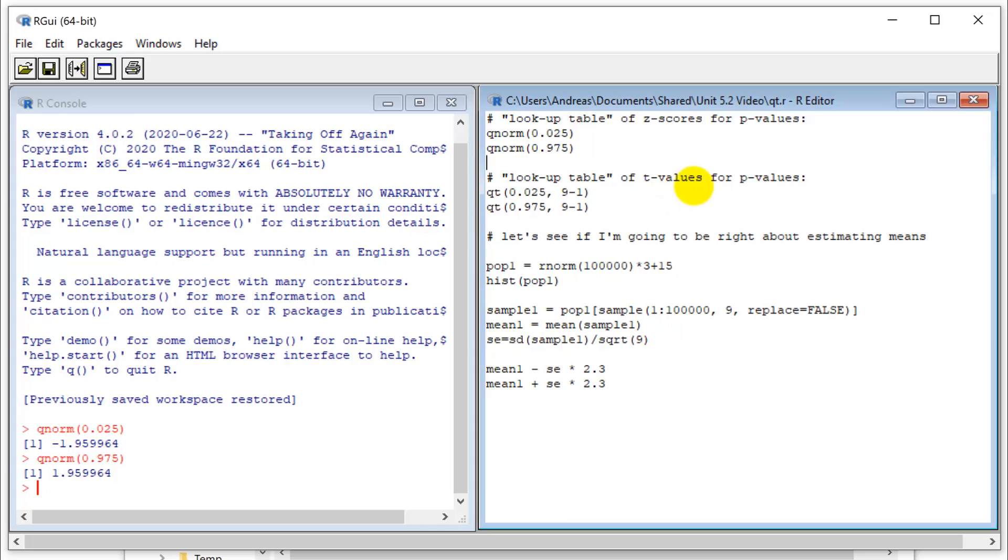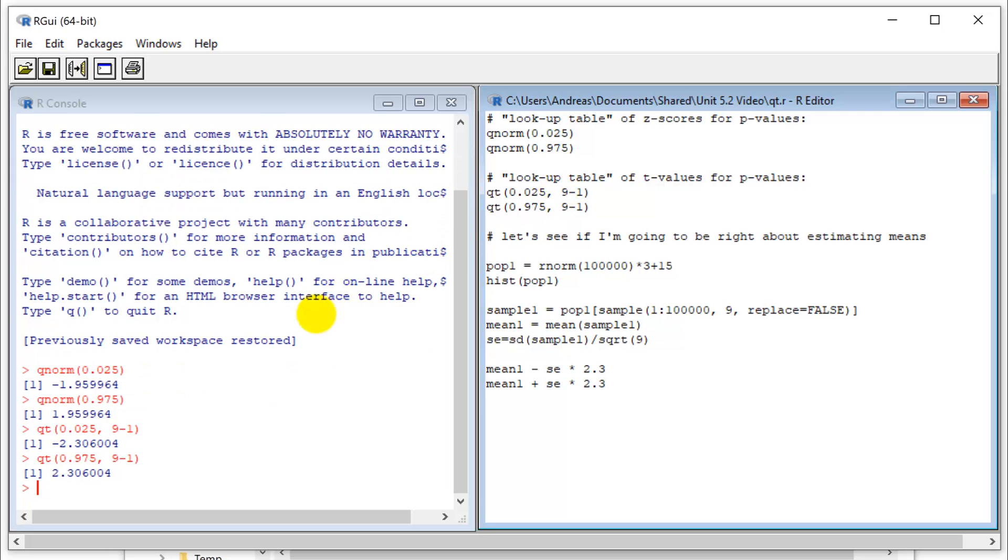Now, if my sample size is small, so in our previous simulations, we used a sample size of 9. My degree of freedom is 9 minus 1. So I can look that same thing up in a table for t values. So that's a qt function. Now let's try this. Minus 2.3 to plus 2.3. And that makes sense because those t distributions are a little wider, a little fatter tails. So those values have to be a little larger to capture the 95%.